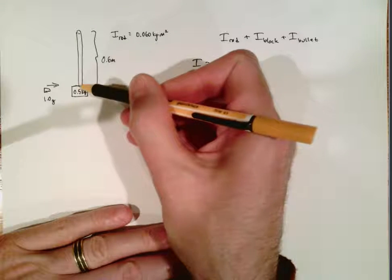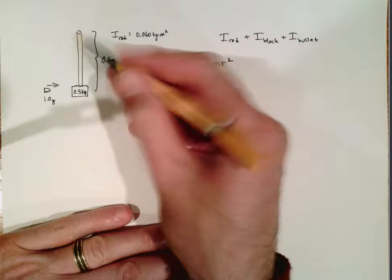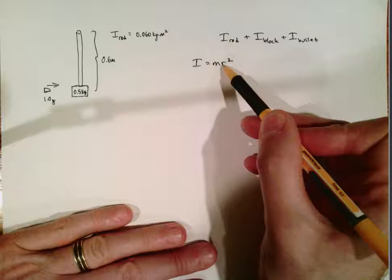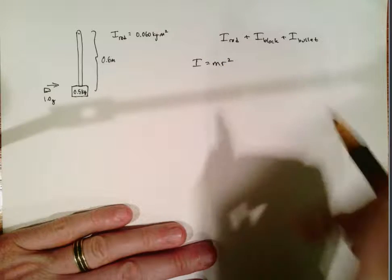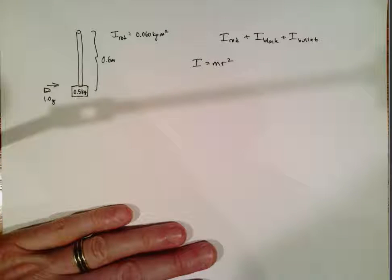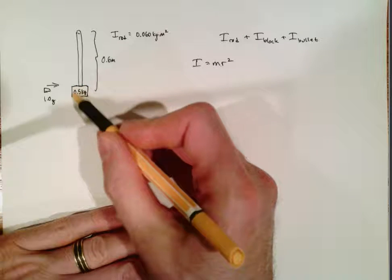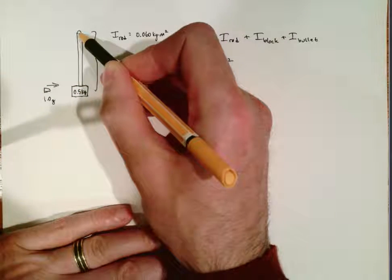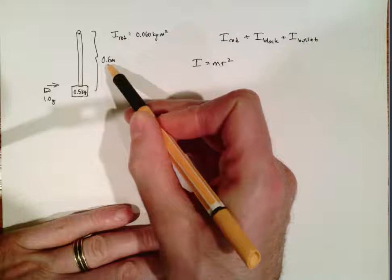And so you can see that one part of the block is closer to the axis of rotation than the other part of the block is, and so the two sides of that object would have different r's. However since they're telling us to consider it to be a particle, a particle means an object whose dimensions are so small you can ignore them. And so basically they're giving us permission to say that this entire 0.5 kilograms is the same distance from the axis of rotation which would be 0.6 meters.